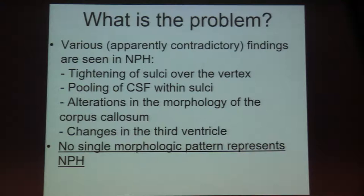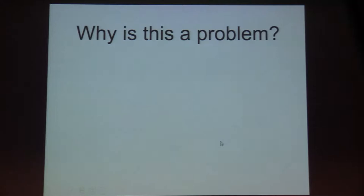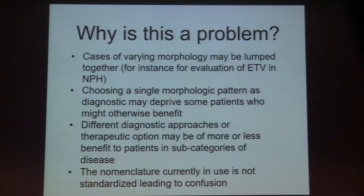There's a problem in that there's not a single morphologic pattern of adult hydrocephalus. Here's a picture from one of the Japanese articles from the Symfonyi study. You can see the pattern they rely upon where there's high convexity tightness and dilatation of the sylvian fissures, which they call DASH. But there's not a single pattern that has been reported to be indicative of adult hydrocephalus.